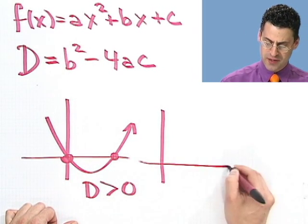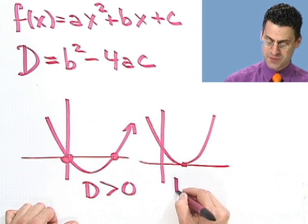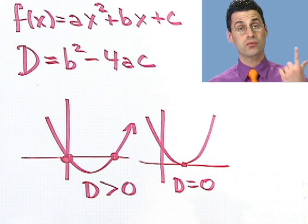Is it going to cross just in one place, which means the parabola comes down, just grazes, and then comes up? That's when the discriminant equals 0 because there's only one root.